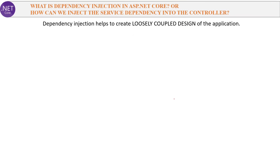Next question: What is dependency injection in ASP.NET Core, or how can we inject a service dependency into a controller? This is the most important question in ASP.NET Core. The one-line answer is: dependency injection helps to create a loosely coupled design of the application. Now I will explain what loosely coupled design means and how to achieve it using dependency injection in ASP.NET Core.